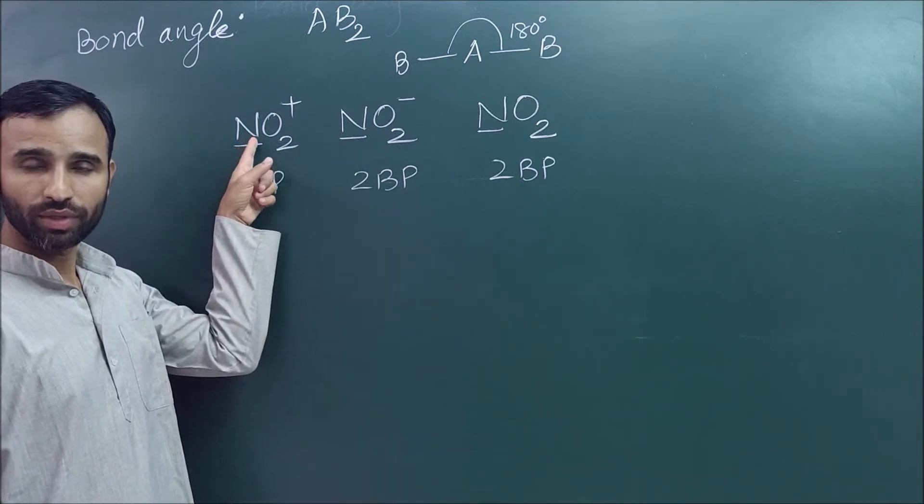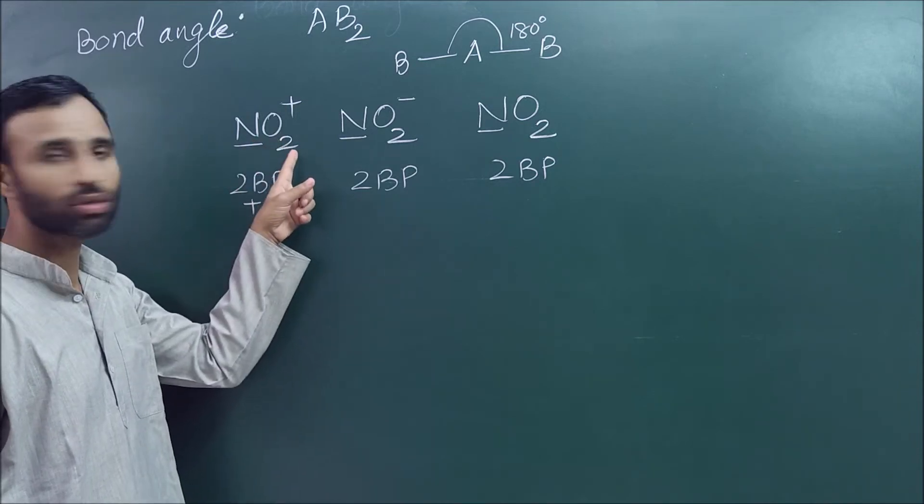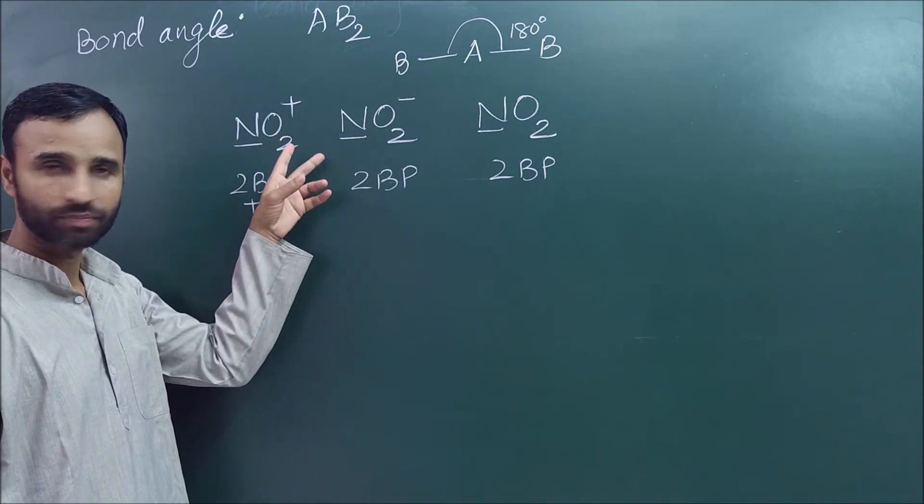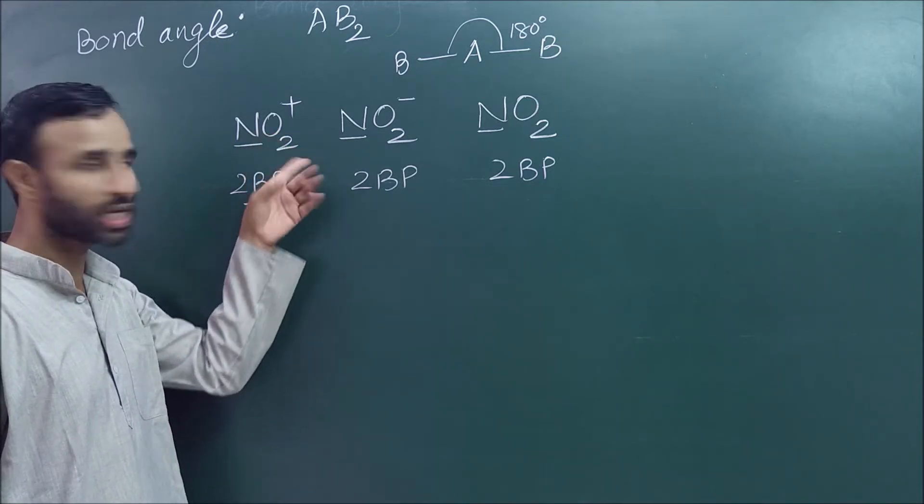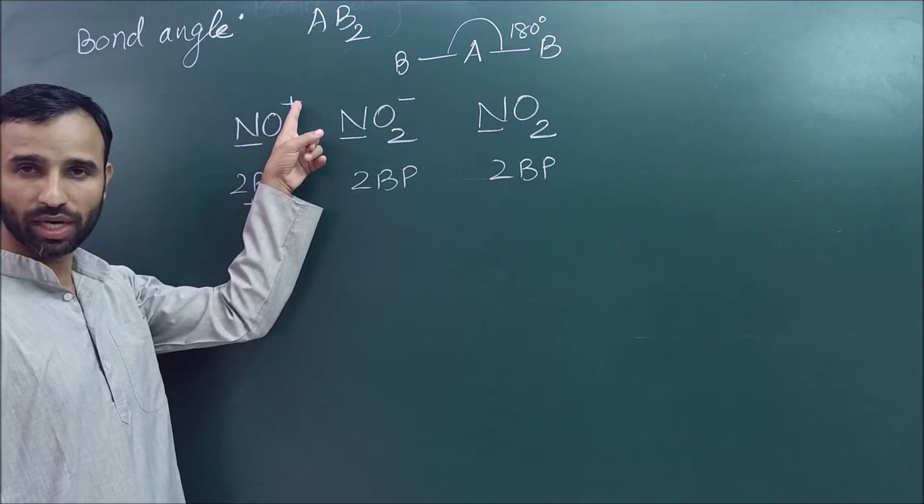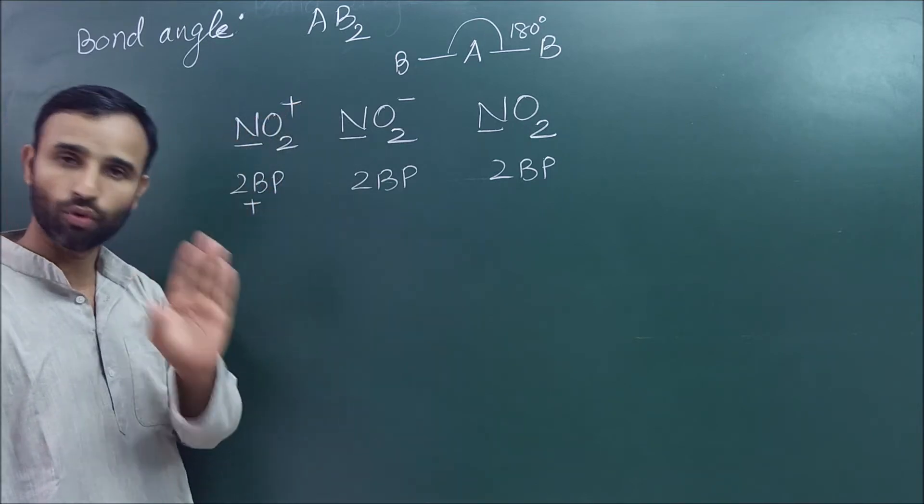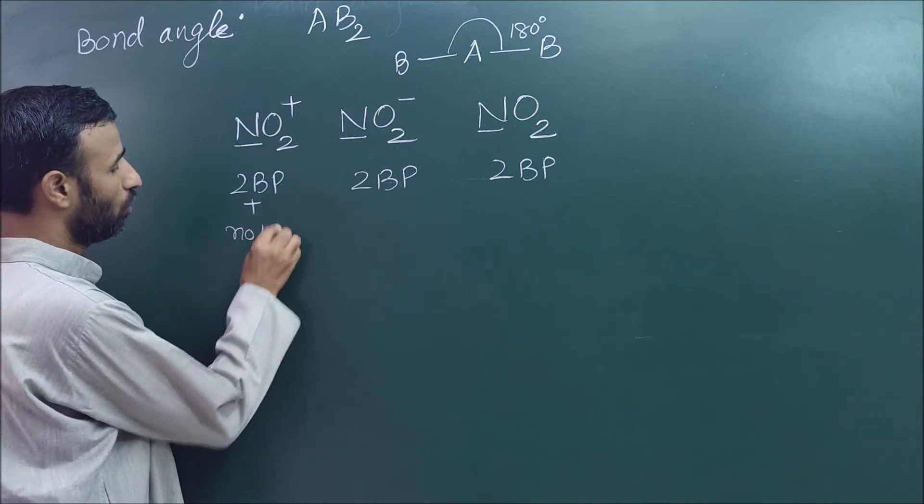In nitrogen we have five valence electrons. Out of five, how many electrons are used by oxygen? Two by each oxygen, so four electrons are used. Nitrogen has five, but there is one positive charge, so it has only four electrons. All are used, so there is no lone pairs.